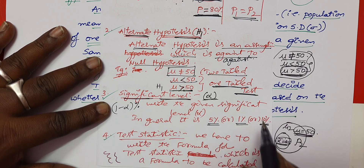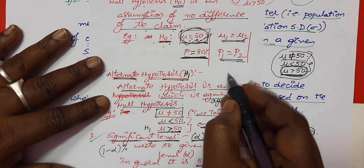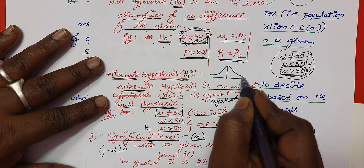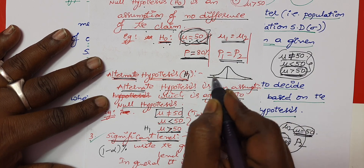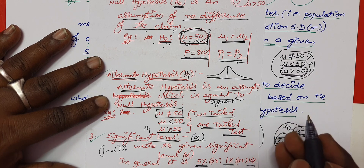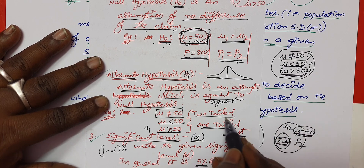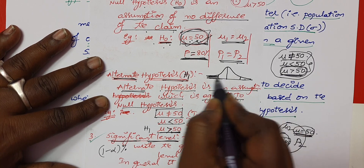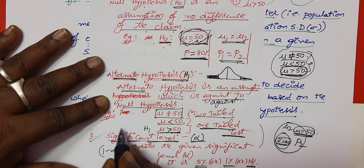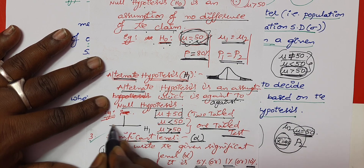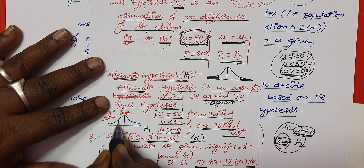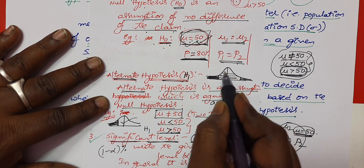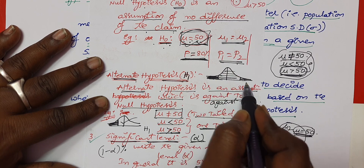This is a critical reason for the significant level. There is a critical region. If you accept a one-tailed test, you accept one critical region on one side. If you accept a two-tailed test, you accept a critical region on both sides — the middle level. There are both critical regions.